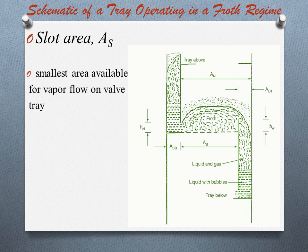Next is slot area, which is denoted by AS. This is the total for all open valves — the vertical curtain area through which vapour passes in a horizontal direction as it leaves the valve. It is a function of the narrowest opening of each valve and the number of valves that are open. This slot area is normally the smallest area available for vapour flow on a valve tray.